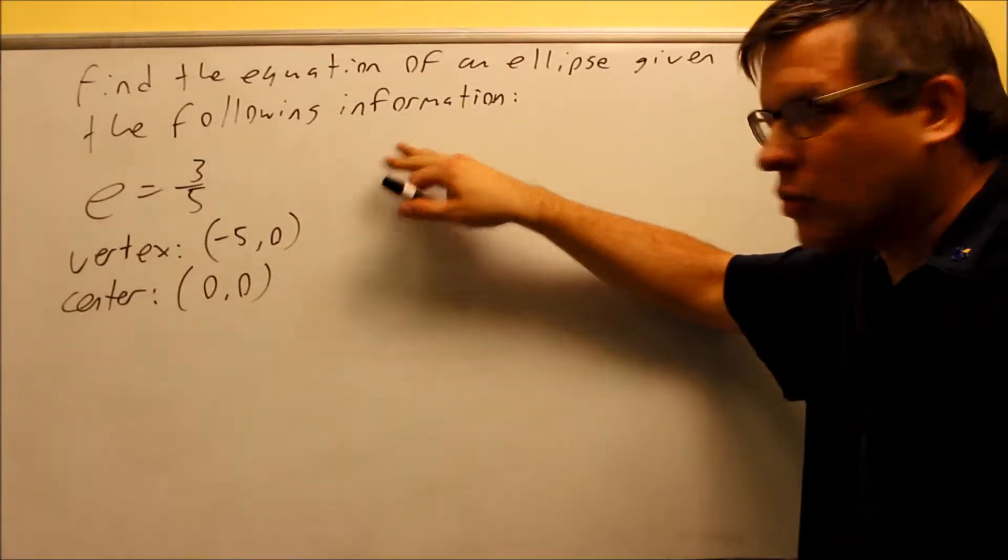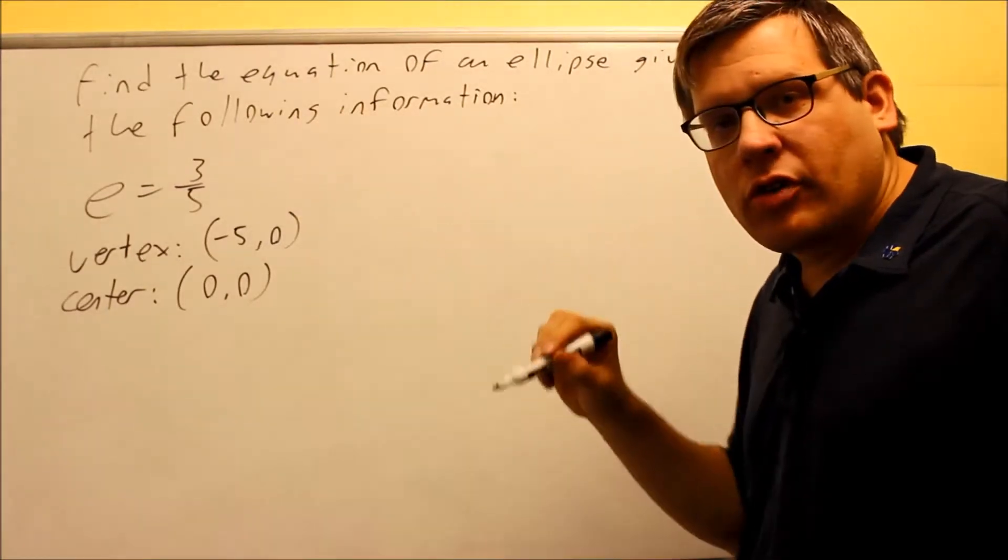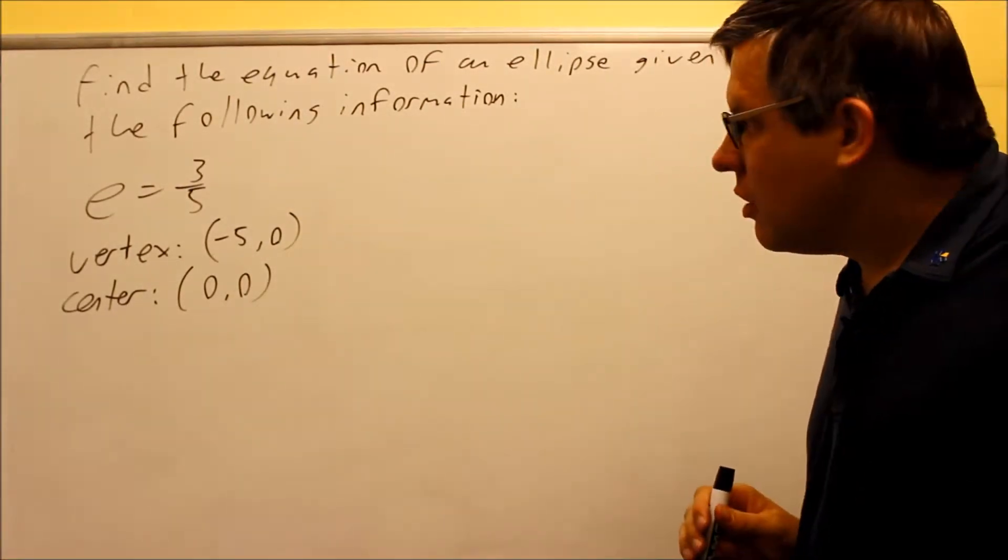Okay, so we're going to find another one here with this given information. Eccentricity is given, one of the vertices is given, and also your center is going to be given here as well.